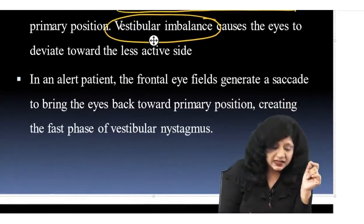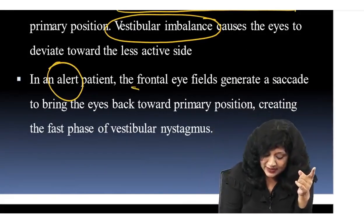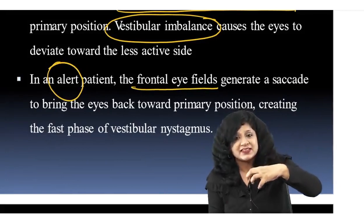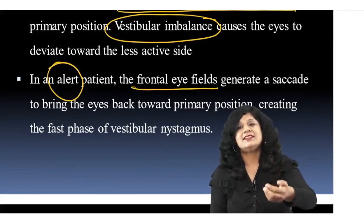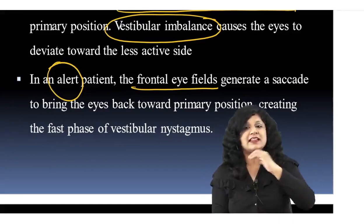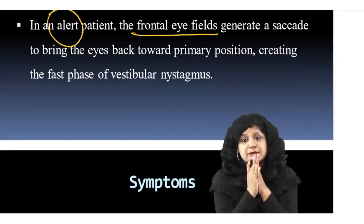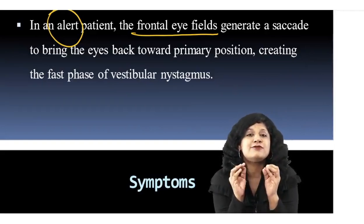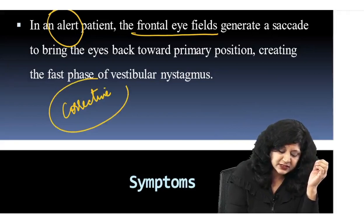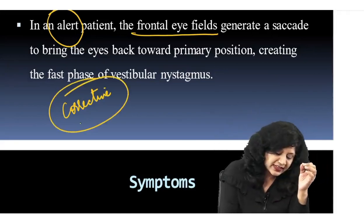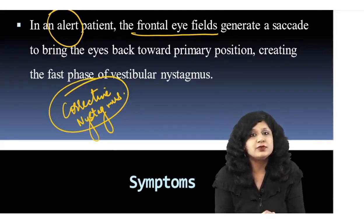If the patient is alert and conscious, the frontal eye fields will generate a saccade to bring the eyes back to normal position. This saccade generated by the frontal eye fields creates the fast phase — that is physiological nystagmus. Always remember: the corrective phase of nystagmus is always a fast phase nystagmus.